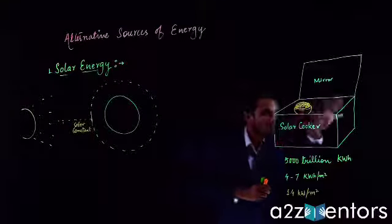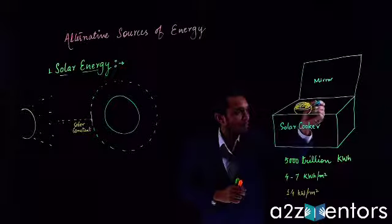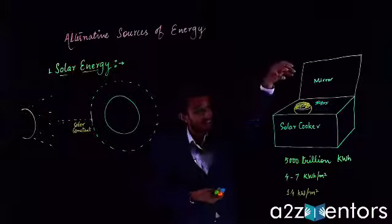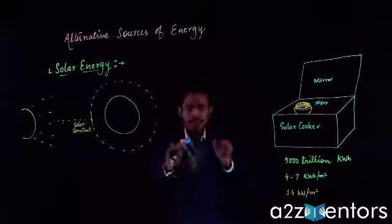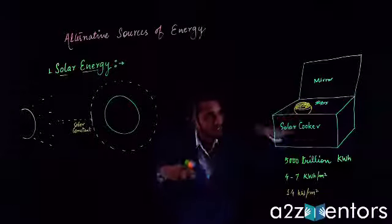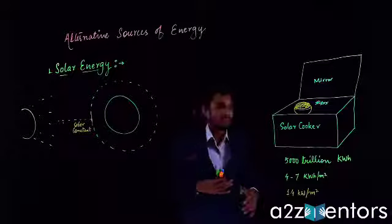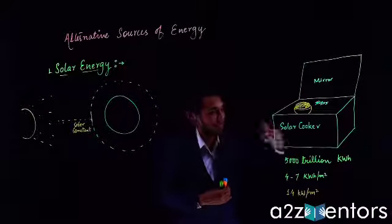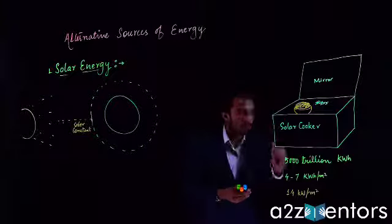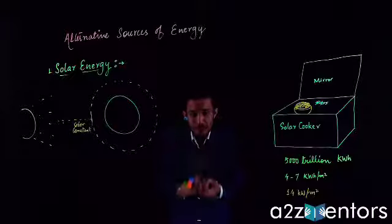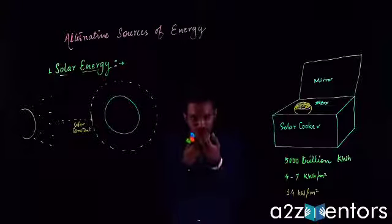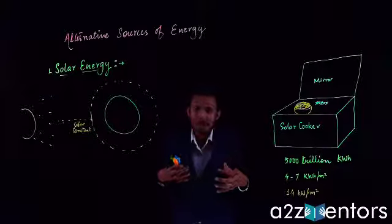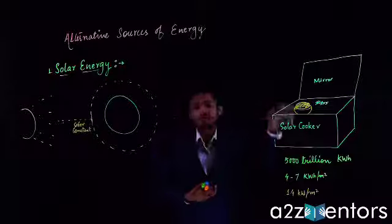The solar cooker is also covered by a flat glass. The glass traps the heat going inside, increasing the temperature within the box. One more important thing: the box of the solar cooker is painted black from the inside. Black absorbs all colors, so it also absorbs the light and heat energy. This is why the interior has a higher temperature compared to the surrounding environment, and this helps in cooking the food.